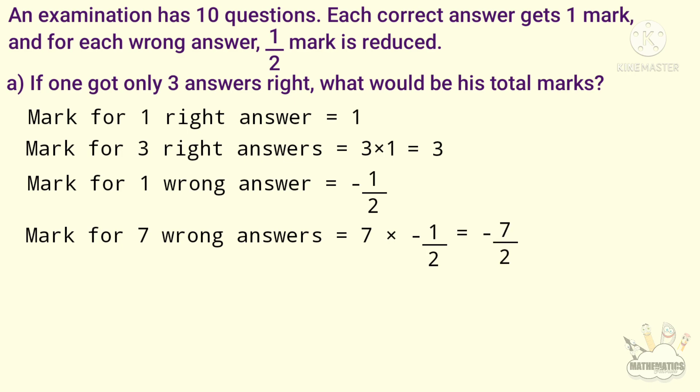That is minus 7 by 2. 7 by 2 is equal to 7 divided by 2. 7 divided by 2 is equal to 3 remainder 1, so 7 by 2 is equal to 3 and a half. So minus 7 by 2 is equal to minus 3 and a half.